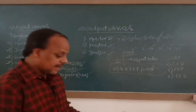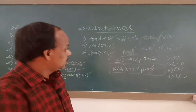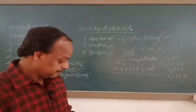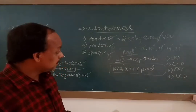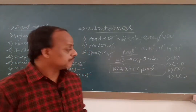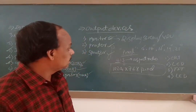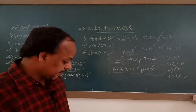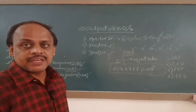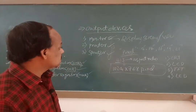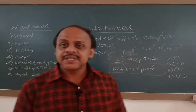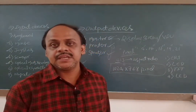The four types of monitors are: CRT — Cathode Ray Tube, LCD — Liquid Crystal Display, TFT — Thin Film Transistors, and LED — Light Emitting Diode.